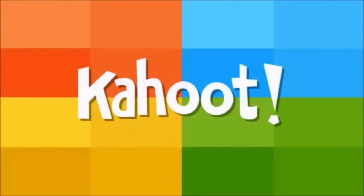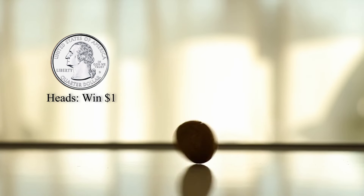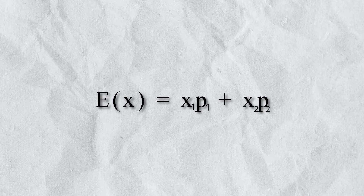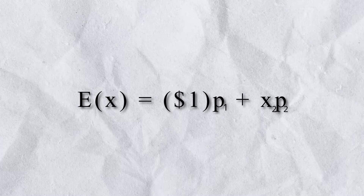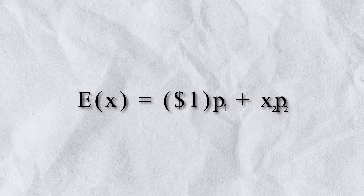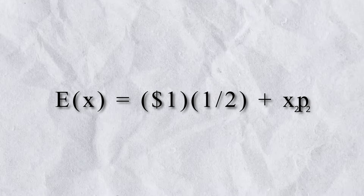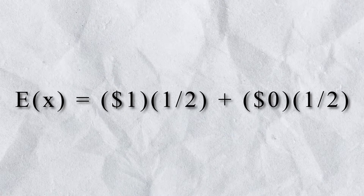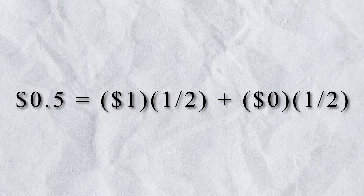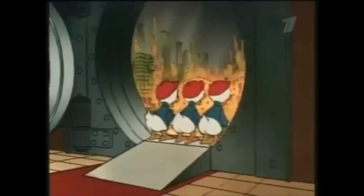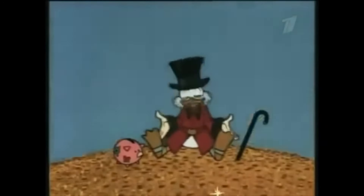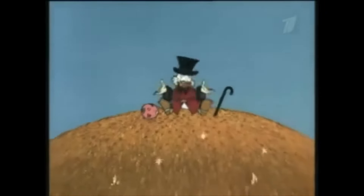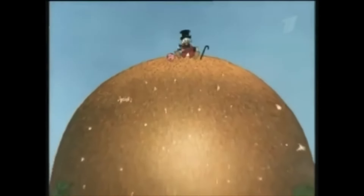Let's illustrate with a quick example. Imagine a game where we flip a fair coin. If it lands on heads, you win a dollar. If it lands on tails, you win nothing. To calculate the expected value, we would first input the value of landing on heads — winning a dollar — and then its corresponding probability, 50%. Next, we do this with the second possible outcome, landing on tails. The result, 0.5, represents the long-term average of playing the game. Note that it's impossible to actually win 0.5 dollars on a single flip, but if you played the game many, many times, the average amount you'd win per flip would converge to about 0.5 dollars.